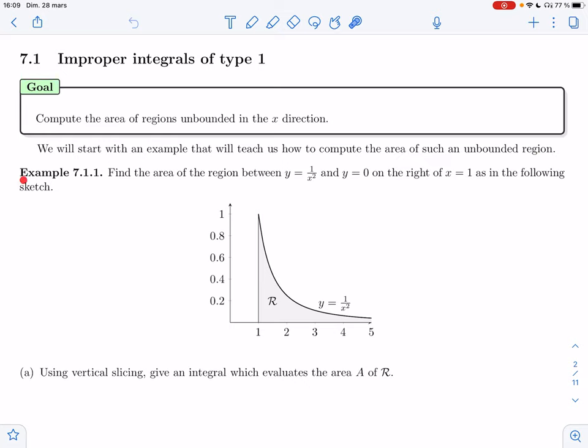Example 7.1.1: Find the area of the region between y equals 1 over x squared, so this curve, and y equals 0 on the right of x equals 1. If you notice, this region keeps going. That's what it means to be unbounded in the x direction. It escapes, it goes off to x being infinity.